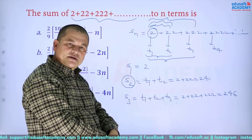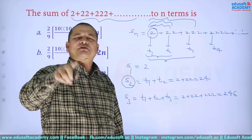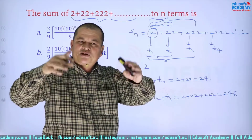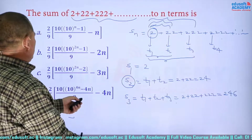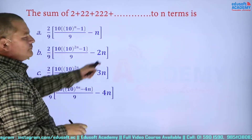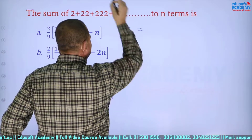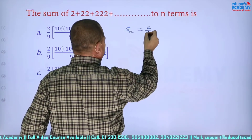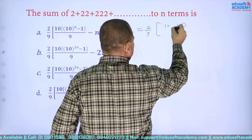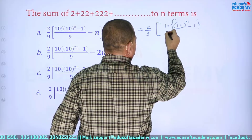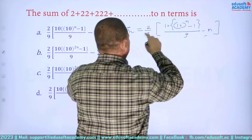You need to check the result from the options. When n = 1, check that the formula gives S₁. The first option is: (2/9) × (10^n − 1)/9 − n. Let us verify this for n = 1, 2, and 3.